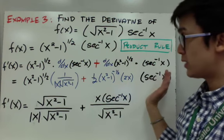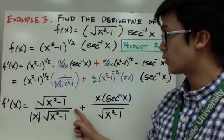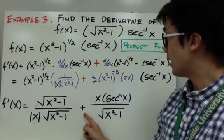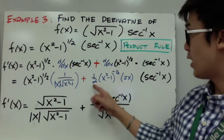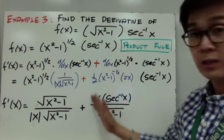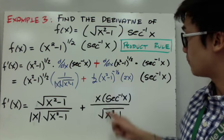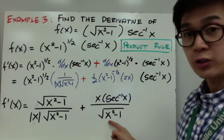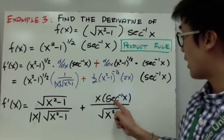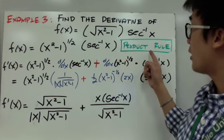To further simplify the derivative, we can combine terms: the square root of x squared minus 1 goes in the denominator. We can also cancel the one half and the 2, so they don't appear in the final fraction. Since we have a negative exponent, it's placed in the denominator. Secant inverse x is positive so it stays in the numerator. This is the final derivative using the product rule and the inverse trig function formula.